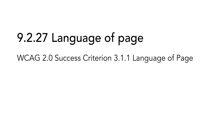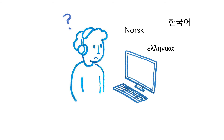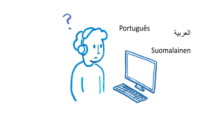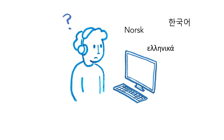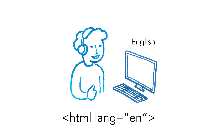9.2.27 Language of Page is based on WCAG 2.0 Success Criterion 3.1.1 Language of Page. The default language of a webpage should be defined in the code. If more than one language is used, the one that is most in use should be defined. This way, assistive technology and user agents can present the text correctly and convert it into synthetic speech with the relevant pronunciation. In HTML5, the main language is declared with the lang attribute on the HTML element.